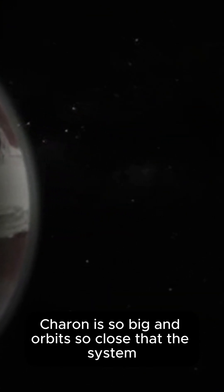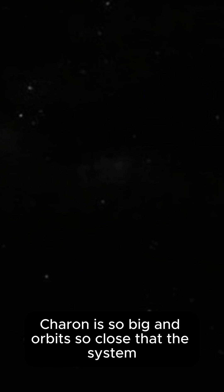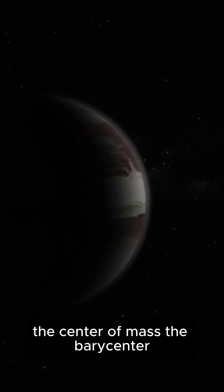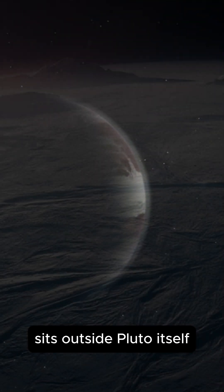Charon is so big and orbits so close that the system's center of mass, the barycenter, sits outside Pluto itself.